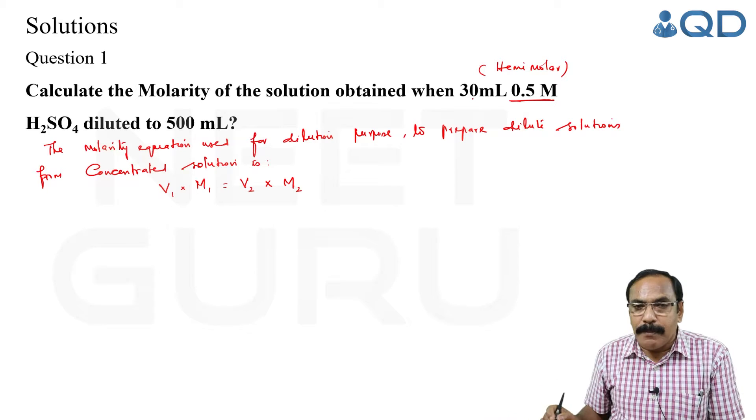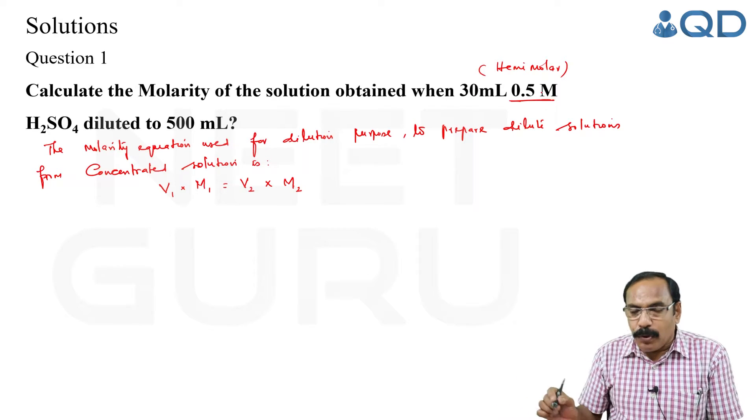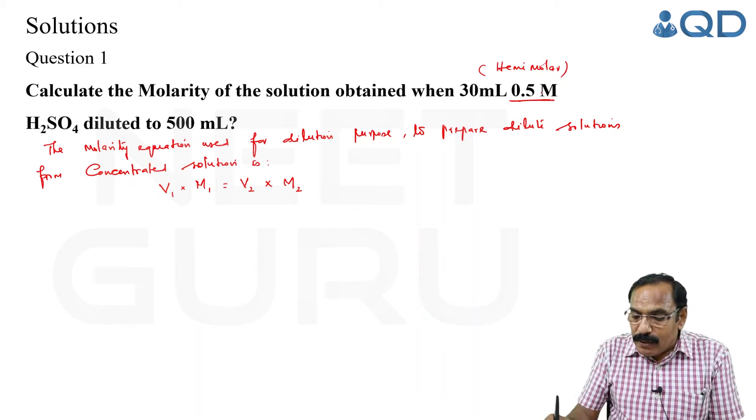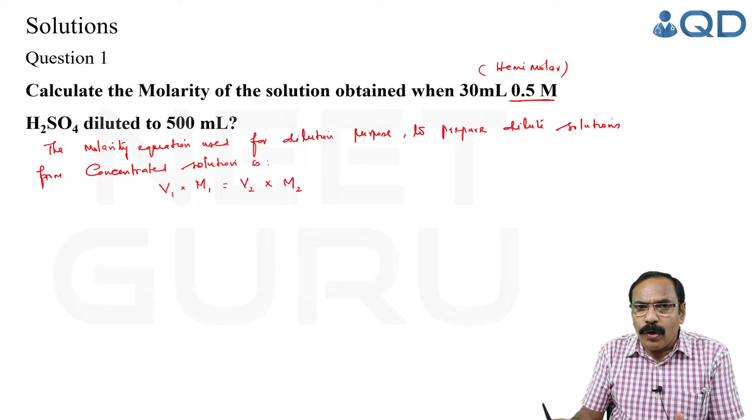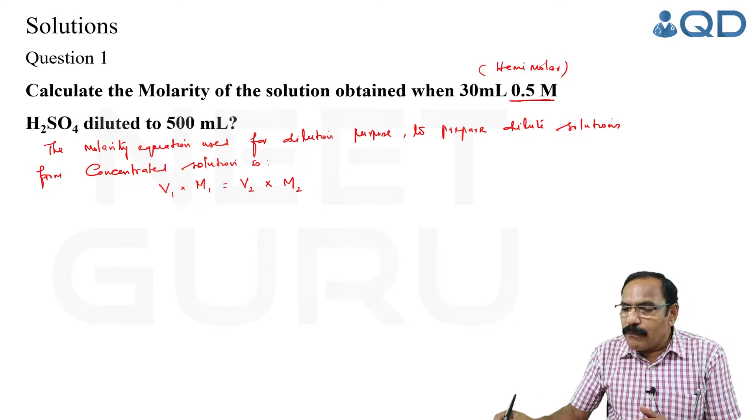Initial solution is 30 mL, initial molarity is 0.5. Final volume is 500 mL - you are diluting it. So what is the final molarity?